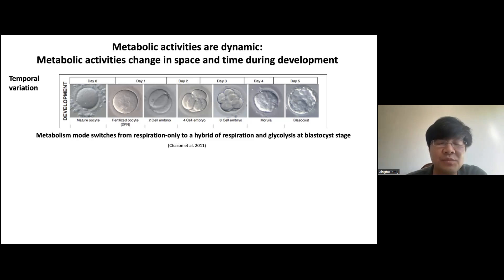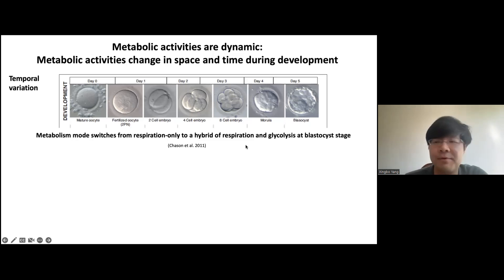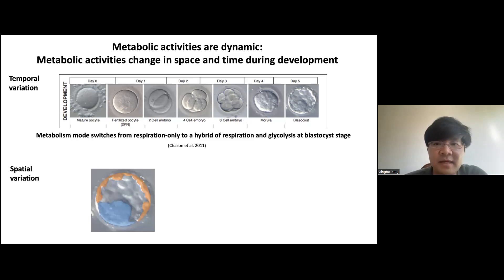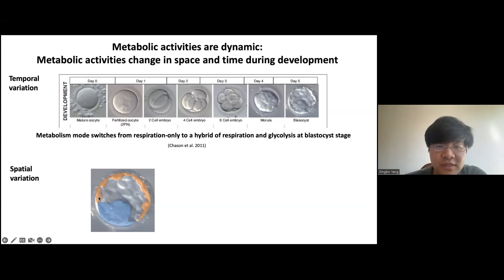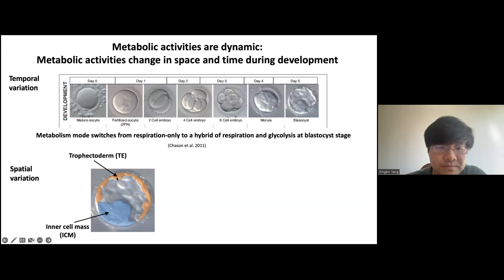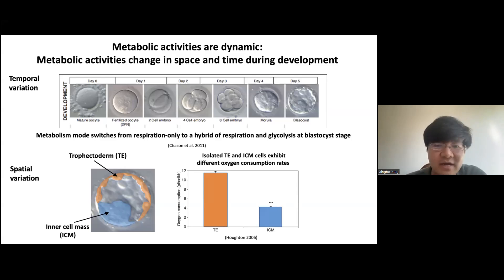The metabolism mode switches from a respiration-only mode at early stages to a hybrid of both respiration and glycolysis at the blastocyst stage, categorizing a temporal variation of metabolism. There is also spatial variation: at the blastocyst stage, the very first cell differentiation event occurs where cells differentiate into two different types of tissues — the inner cell mass, which ultimately develops into the embryo, and the trophectoderm, which develops into the placenta. By isolating these two cell types and measuring their oxygen consumption rate, it has been shown that the oxygen consumption rates are different, showing potential spatial variation.